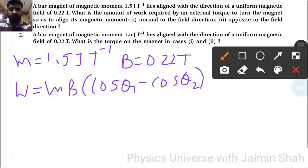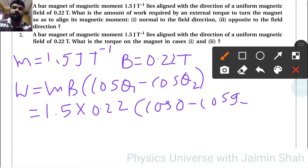θ₁, we know that earlier it is the same direction, so 1.5 × 0.22 × cos 0, and the last one is normal, so 90 degrees. So 1.5 × 0.22...